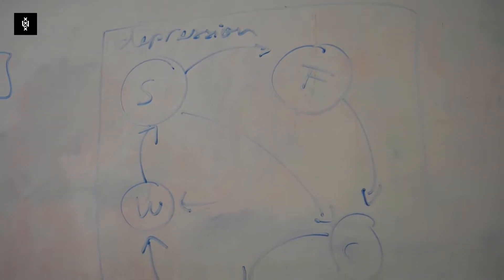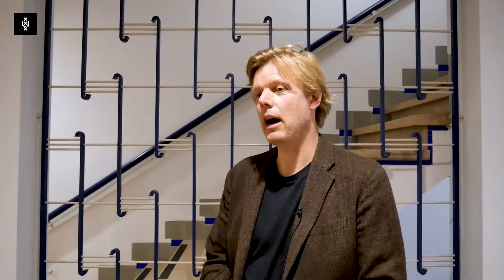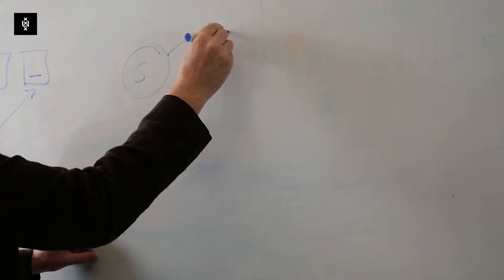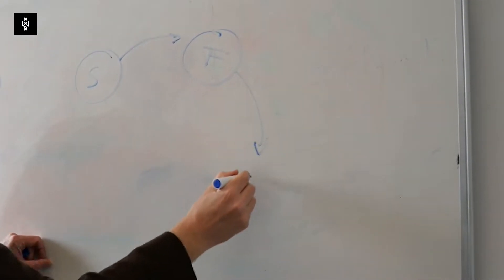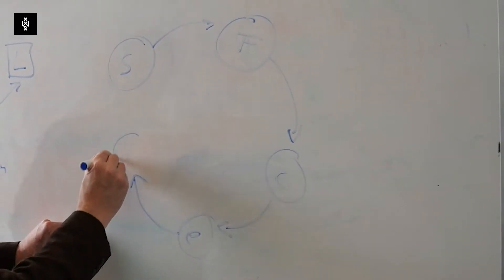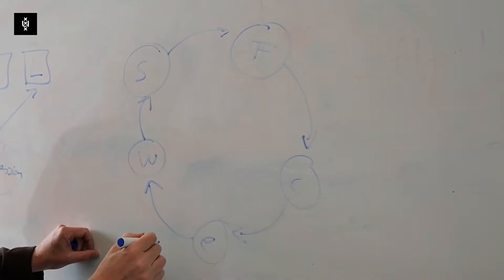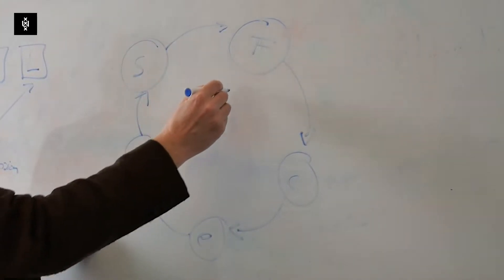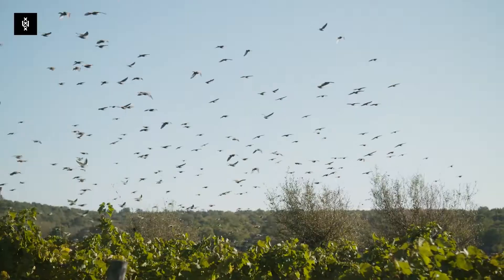In the network approach, we take a different view of how these symptoms operate. We have the view that symptoms can influence each other. For instance, if you don't sleep well, you can get tired, you make mistakes, you have concentration problems, you feel guilty about things you've done and you start worrying — all of these variables can start to influence each other. They form a network structure, a system of elements that react together, and that's why they can go up and down together. Rather than a mental disorder like depression being the common cause of all of these symptoms, they cause each other and they move together like a flock of birds.